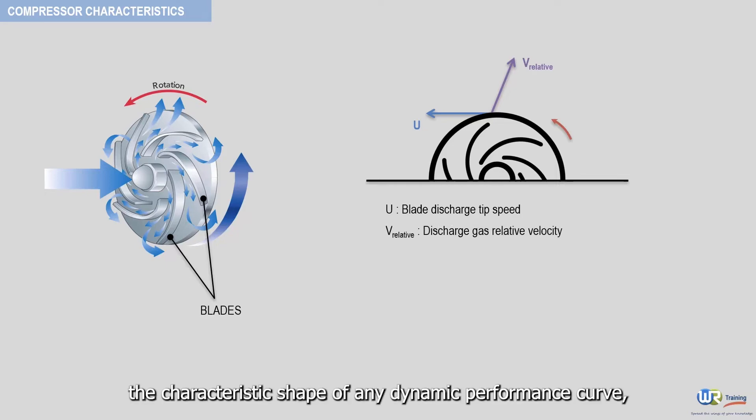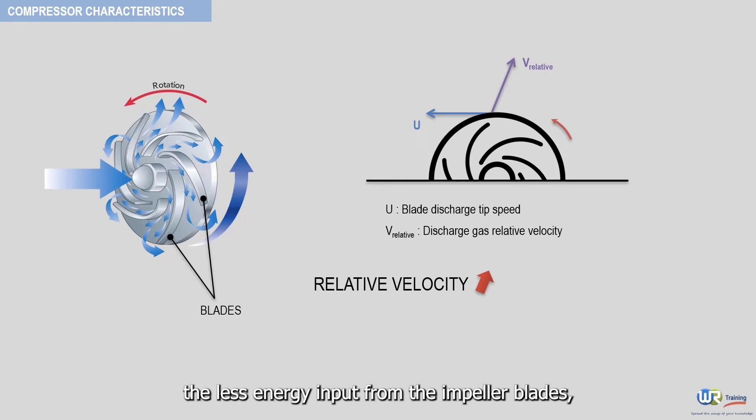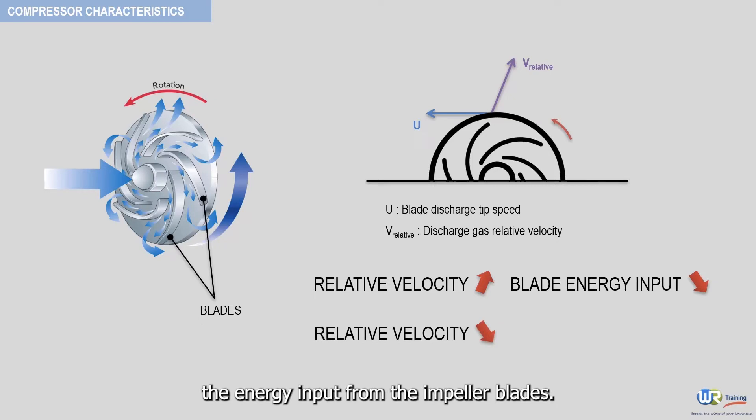Simply stated, the characteristic shape of any dynamic performance curve, rising head versus decreasing flow rate, is a direct result of the relative velocity through the impeller blades. The higher the relative velocity, the less energy input from the impeller blades. And the lower the relative velocity, the greater the energy input from the impeller blades.